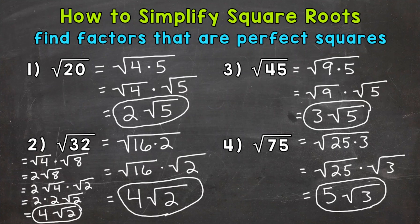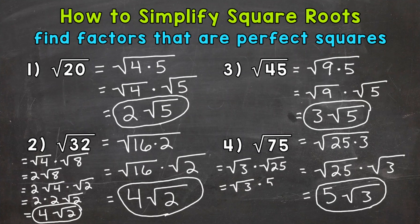I do want to mention that we always put the number before the square root symbol, as you can see in all four of our final simplified answers. For example, if we were to start with the square root of 3 times the square root of 25 and get the square root of 3 times 5, you would want to rearrange this so the number comes first and the square root second. That's common practice and how you would want to leave your answers.